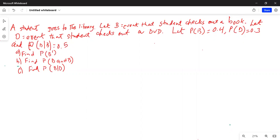There are three parts to the problem. Part A: Find probability of B prime, the opposite of B. Part B: Find probability of D and B. Part C: Find probability of B given D has occurred. So let's find the solution to these parts.